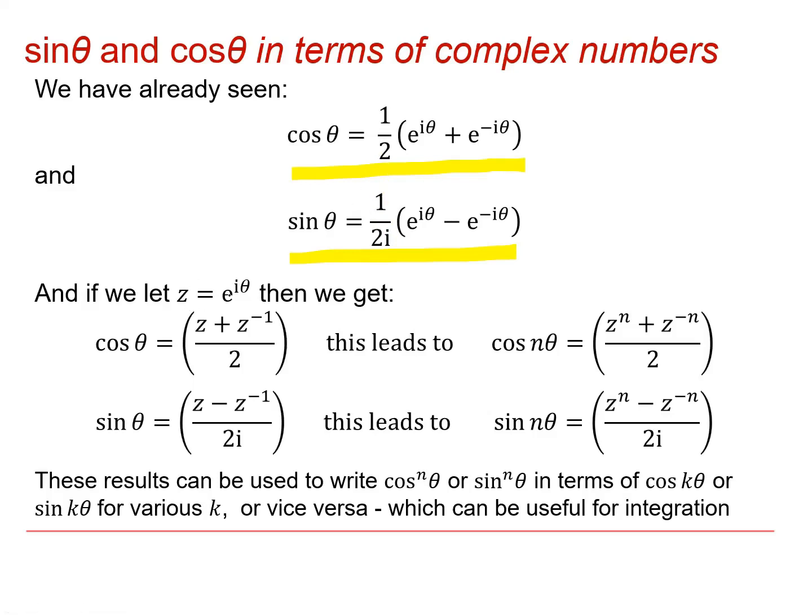So if we let z equal e to the i theta, I could rewrite this expression up here as cos theta is equal to z plus z to the minus 1 over 2. And this leads to an expression for cos n theta being z to the n plus z to the minus n over 2.